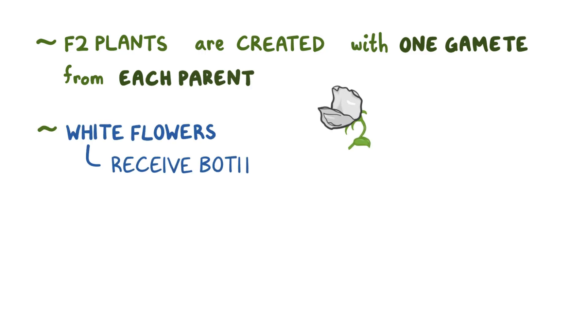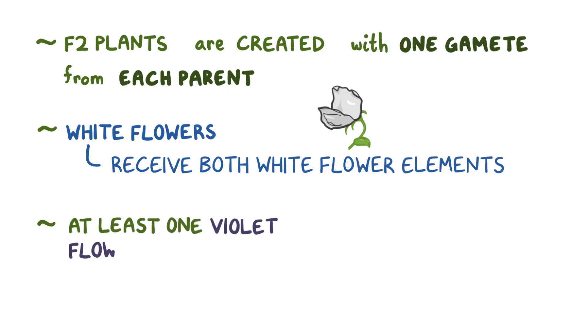The F2 plants are created with one gamete from each parent, and Mendel worked out that the white flowering plants resulted when they received both white flower elements, and that plants that had at least one violet flower element from either parent would produce violet flowers.